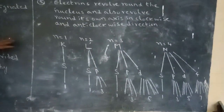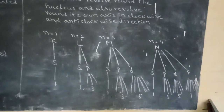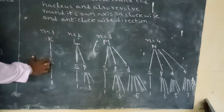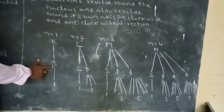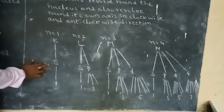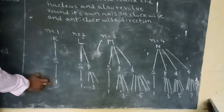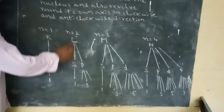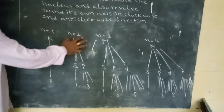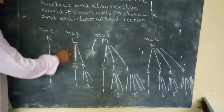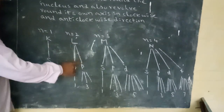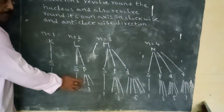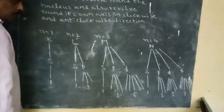Now observe the modern atomic structure in the figure. N=1 is the K-Shell — it is divided into 1 atomic orbital S. In the presence of a magnetic field, this S orbital is divided into 1 line. N=2 is the L-Shell — L-Shell is divided into 2 atomic orbitals: S and P. S is divided into 1 line and P is divided into 3 lines.